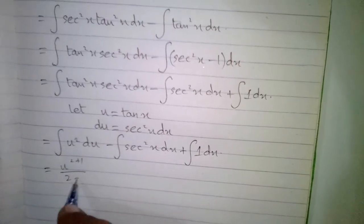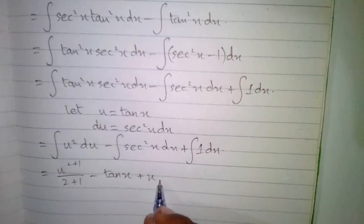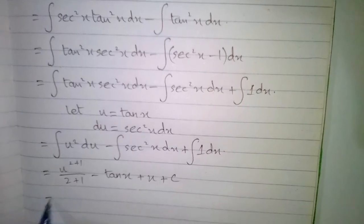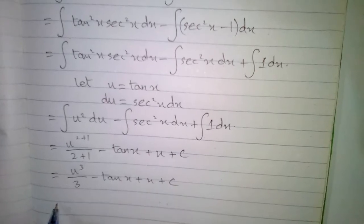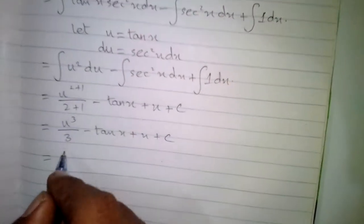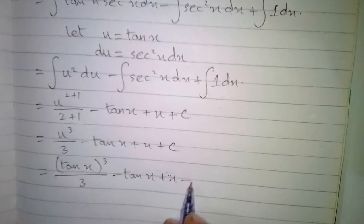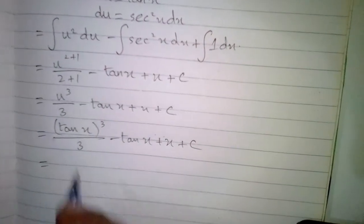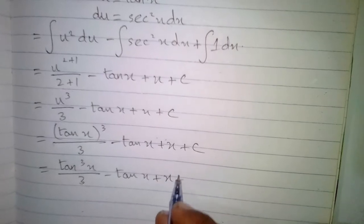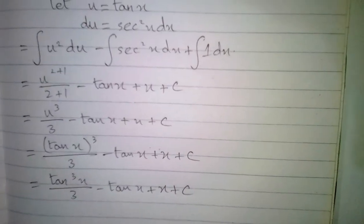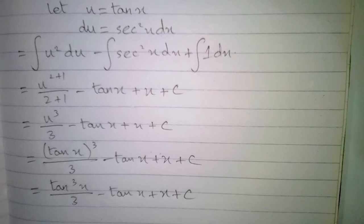The integral of u² is u to the power 2 plus 1 upon 2 plus 1, minus the integral of sec²x which is tan x, and the integral of 1 is x plus c, where c is the constant. After simplifying we have u³ upon 3 minus tan x plus x plus c. Now substituting back u equals tan x, we get tan³x upon 3 minus tan x plus x plus c. So the integral of tan⁴x is tan³x upon 3 minus tan x plus x plus c, where c is the constant.